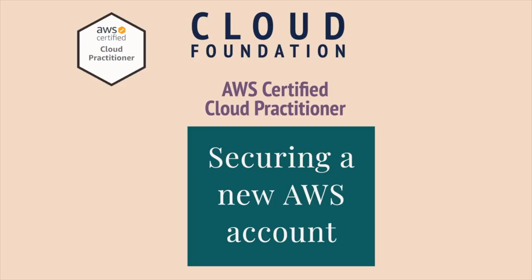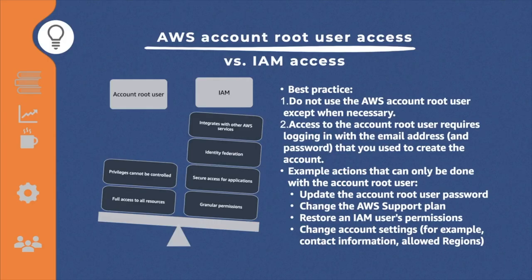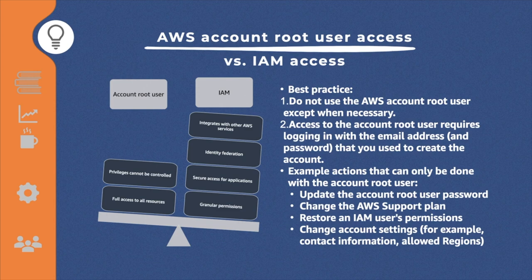Let's look at securing a new AWS account. In AWS, there are two types of users: the AWS account root user (created when you sign up with AWS, providing your credit card and billing details) and IAM users (created using the IAM service). Best practice is to not use the root account at all unless absolutely necessary. Some actions can only be done from the root user: updating the root user password, changing the AWS support plan, restoring IAM user permissions, or changing account settings like contact information, allowed regions, and payment details.